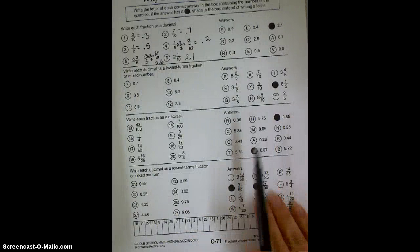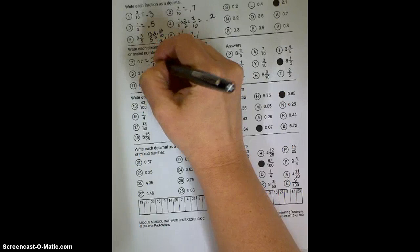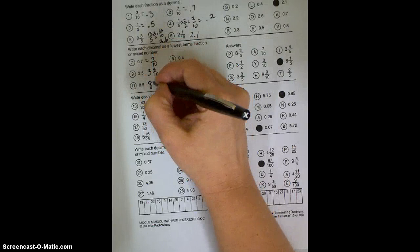Write each decimal as lowest fraction or mixed number. This one we're going to change to 7 tenths. This one we're going to change to 3 and 5 tenths. This one we could change to 8 and 9 tenths. These are all mixed numbers today.